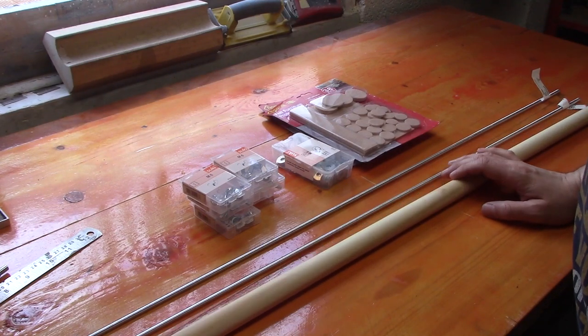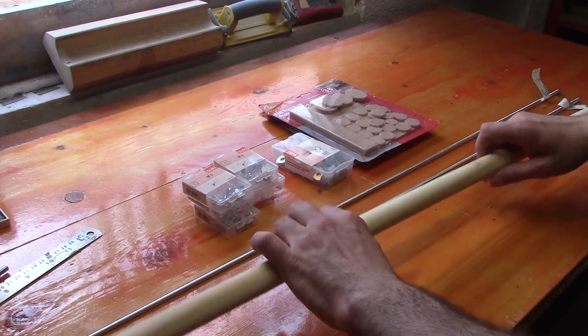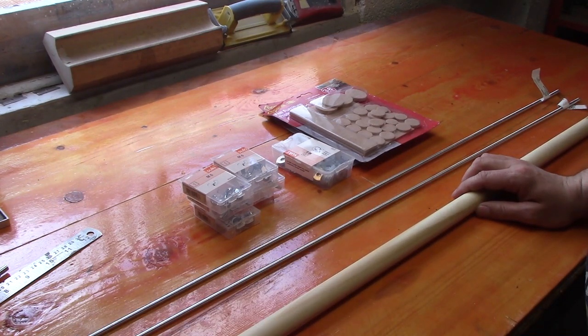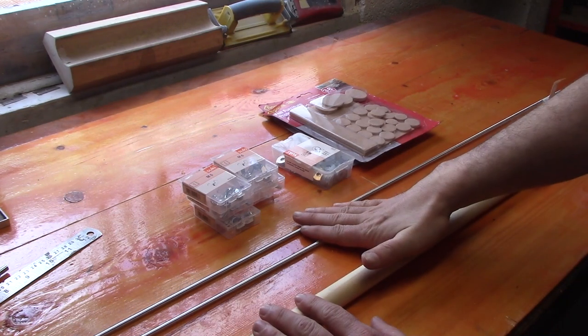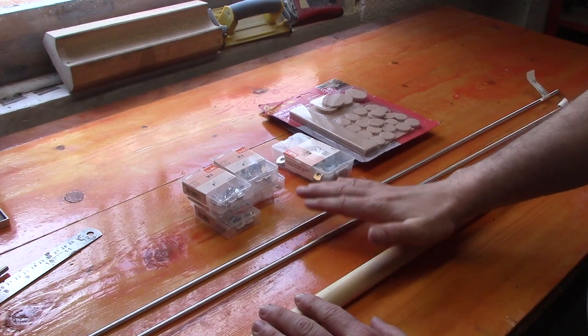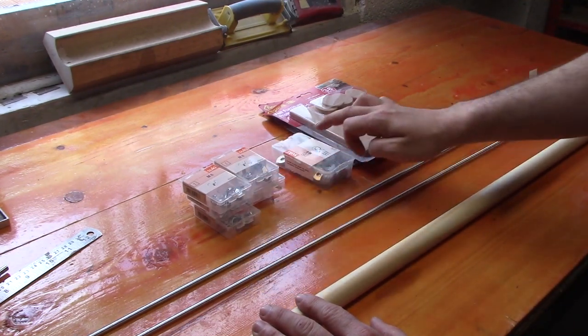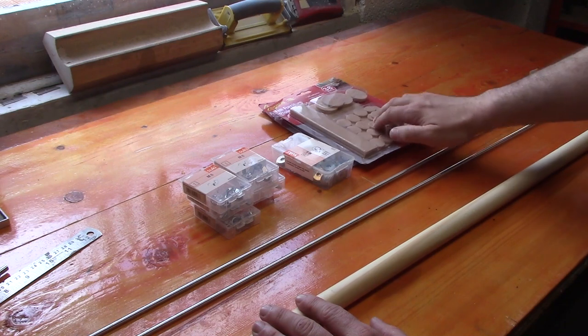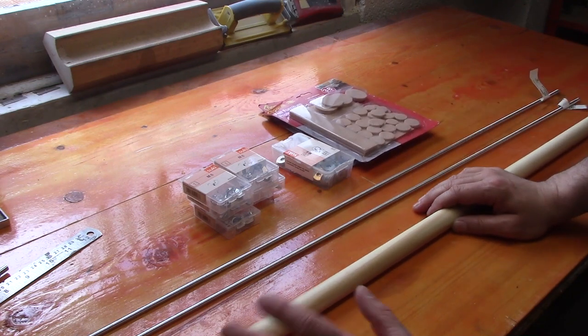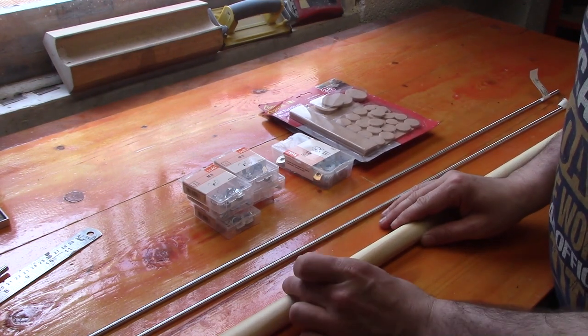We've got a large dowel, similar to a broom handle, some M6 threaded rod, M6 wing nuts, M6 washers, and some felt furniture pads.